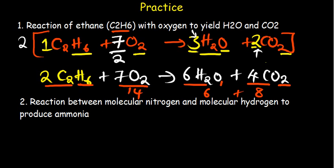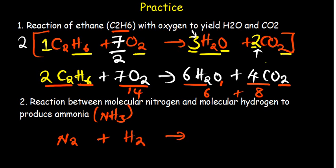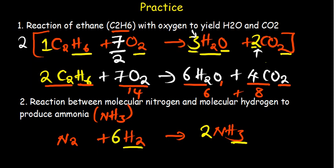Third example: molecular nitrogen and molecular hydrogen to produce ammonia. Ammonia is NH₃. Write the equation: N₂ + H₂ → NH₃. Observe nitrogen first: two on the left, one on the right — put a 2 in front of NH₃. Now hydrogen: two on the left, and 2×3=6 on the right — put a 3 in front of H₂ to give six hydrogen atoms on the left as well.